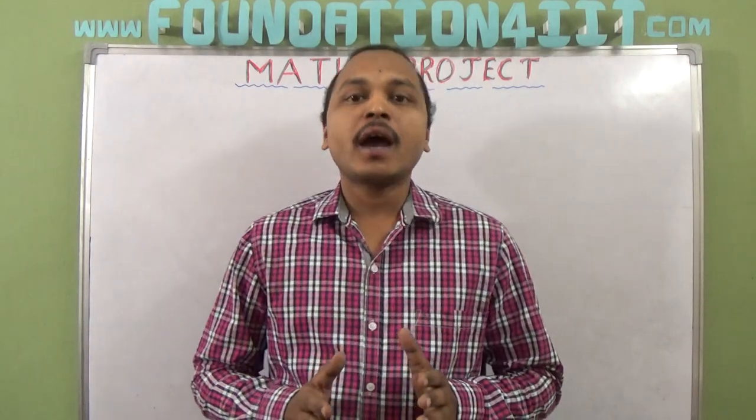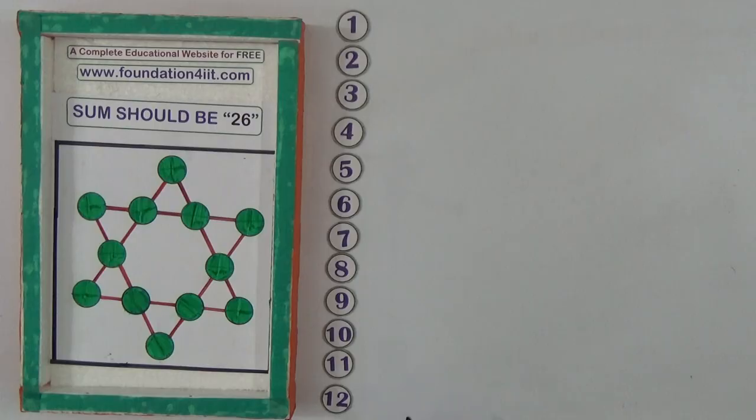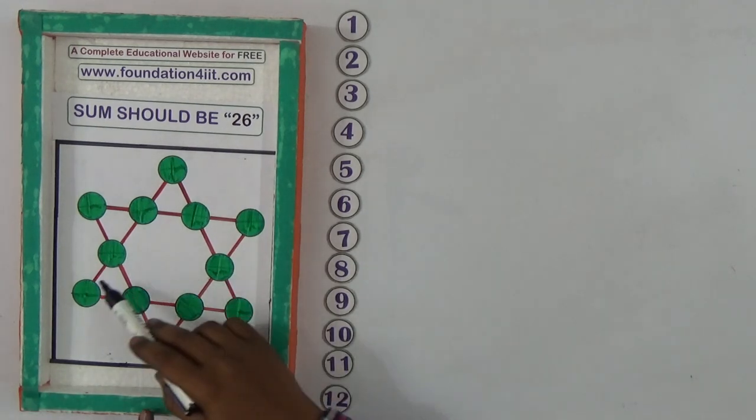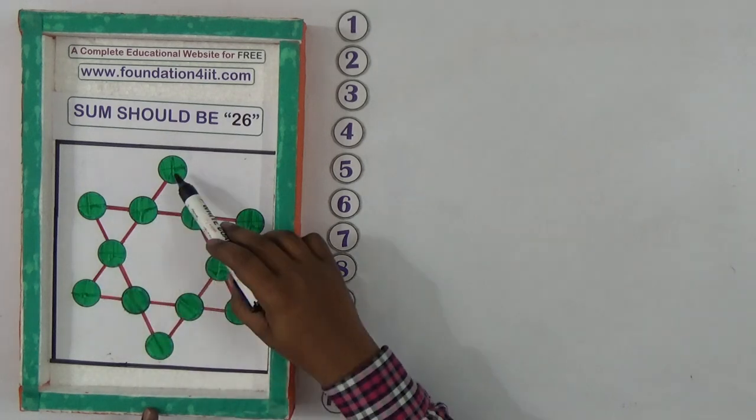I brought the project including solution which I'll explain. So let us see. In this number game, sum should be 26. Observe the question here - there are two triangles, this is one triangle, every straight line has four circles and one more triangle.